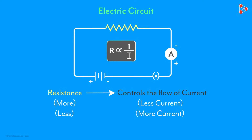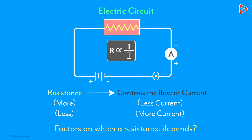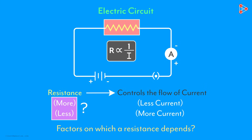Let's talk a bit more about resistance. What are the factors on which the resistance of a conductor depends? When can we say that the resistance of a conductor is more or less than that of another? Let's do a small activity to understand this.